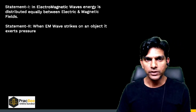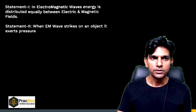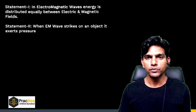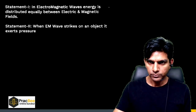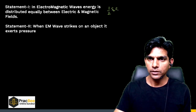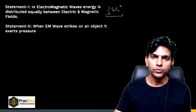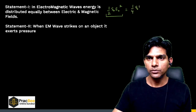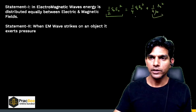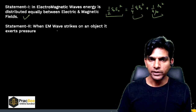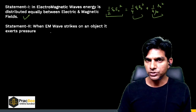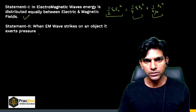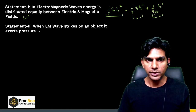The next question is from Electromagnetic Waves — theory based. Statement 1: In EM waves, energy is distributed equally between the electric and magnetic fields. The energy density is (1/4)ε₀E₀² from the electric field and (1/4μ₀)B₀² from the magnetic field, and these are equal — so Statement 1 is correct. Statement 2: When an EM wave strikes an object it exerts pressure due to momentum transfer — also correct. Both statements are correct.